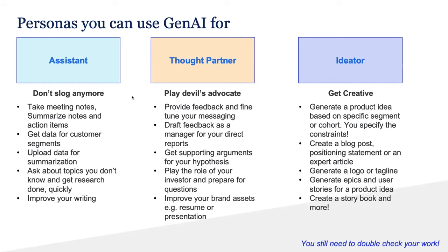You can also use AI as an assistant for research-related work — you can get data on a particular customer segment, or data about a particular market or cohort. Depending on which Gen AI tool you use, it'll give you some pretty solid data. However, be skeptical sometimes and cross-check your work. If you use ChatGPT 3.5, it's probably not completely up to date — it goes up to around June 2022. But if you use ChatGPT 4, that will give you up-to-date data.